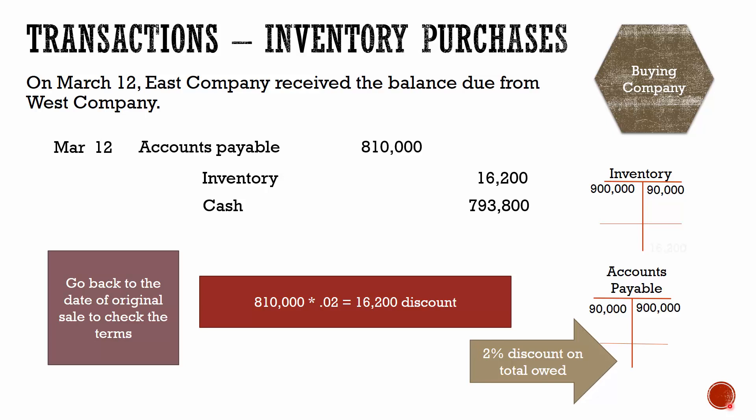After this transaction on March 12th, our inventory balance goes down by the $16,200, our accounts payable goes down by the full $810,000, and the ending balance in accounts payable is zero. The ending balance in the inventory account matches what we actually paid for that inventory. The goal under the perpetual method for purchases of inventory is to track how much it actually costs you to obtain that inventory.